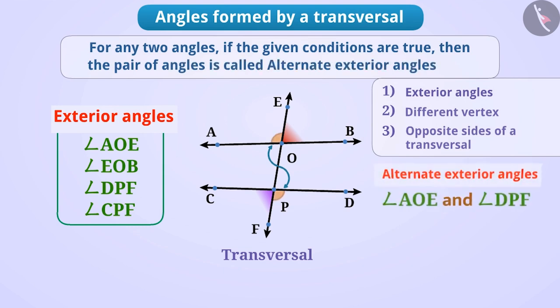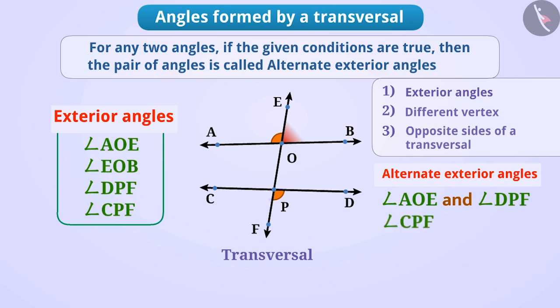Can you find out another pair of alternate exterior angles apart from this? Try it yourself. Here, angle CPF and angle EOB are another pair of alternate exterior angles.